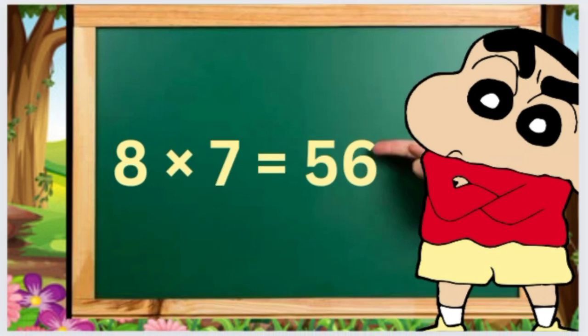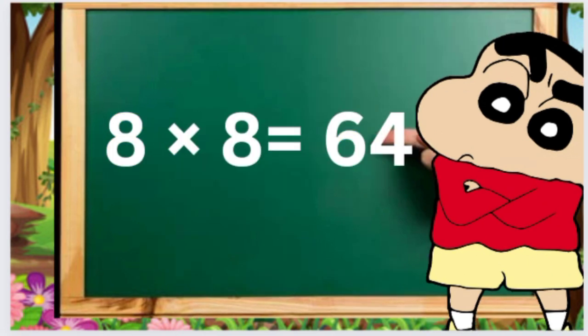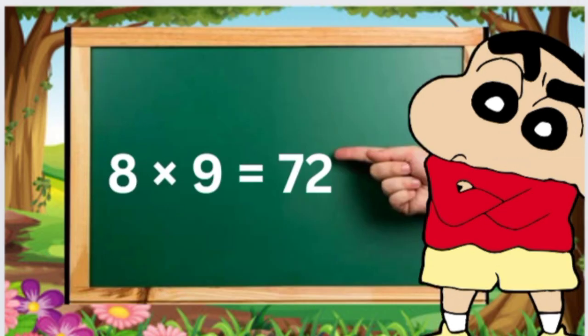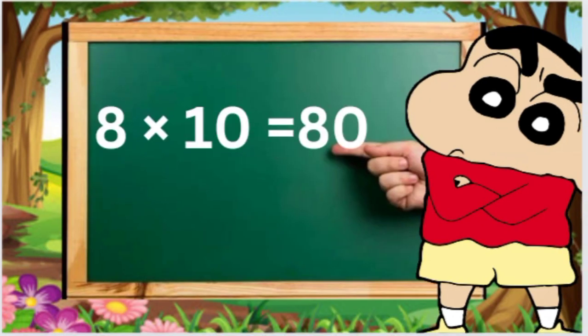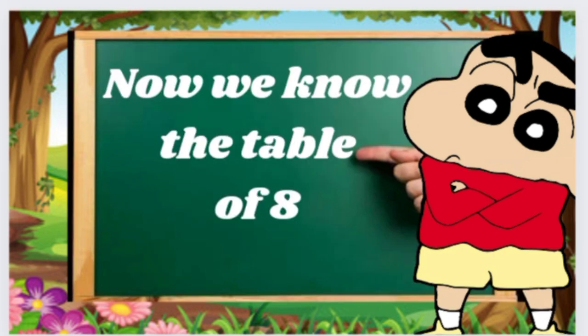Eight, six's forty-eight. Eight, seven's fifty-six. Eight, eight's sixty-four. Eight, nine's seventy-two. Eight, ten's eighty. Now we know the table of eight.